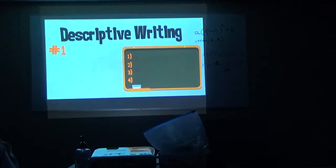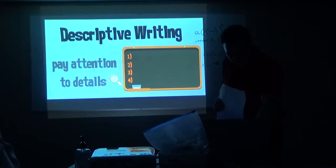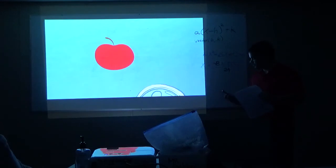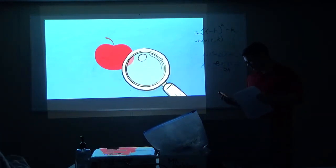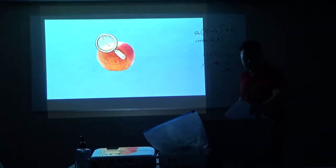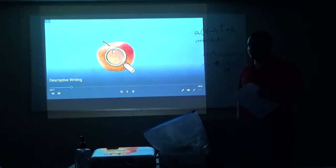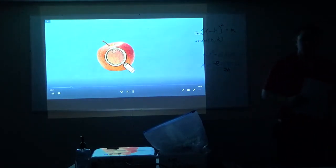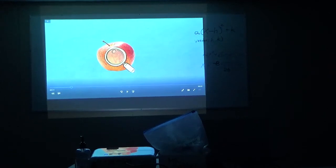Let's break down four codes that make for effective descriptive writing. Number one: pay attention to details. Whereas regular writing might see a red apple, descriptive writing sees a detail of the stem. And then we have a pause here - I've just been informed we're about to go to library class, so we're going to stop recording.